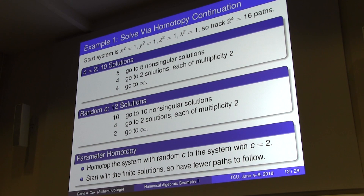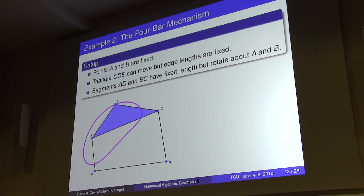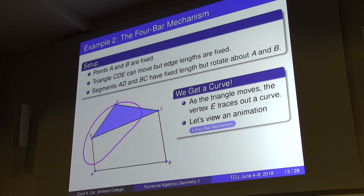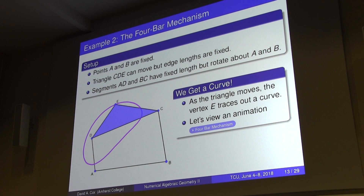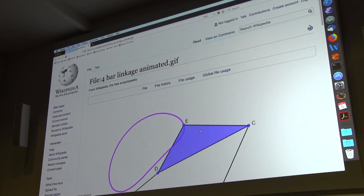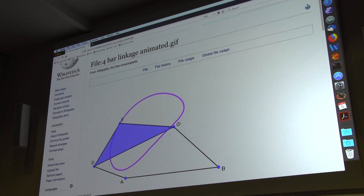The next example is the four-bar mechanism. The setup has fixed points A and B, a triangle with fixed edge lengths that can move, and segments AD and BC with fixed lengths that can rotate about their respective points. As the triangle moves, vertex E traces out a curve. Here's an animation from Wikipedia showing one segment simply rotating around, driving the whole mechanism to produce a nice curve.